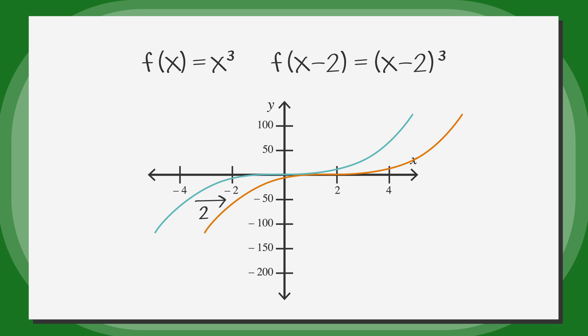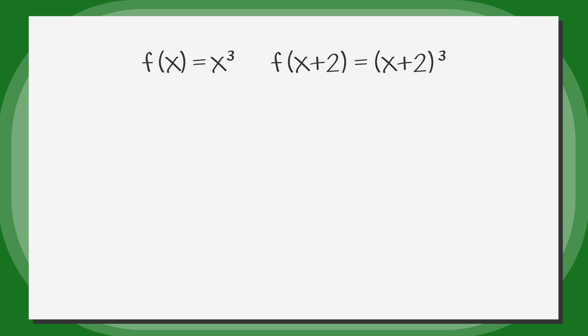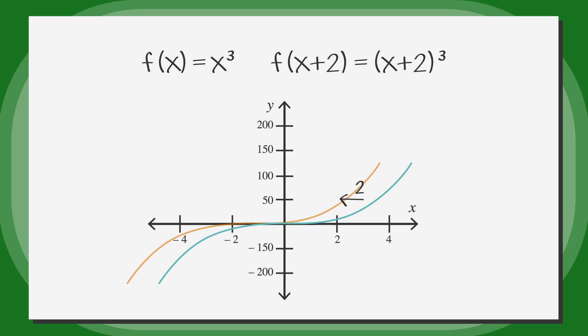Algebraically, substituting x plus 2 in for x, we get the new function (x+2) cubed. Then f(x+2) would shift the function f(x) equals x cubed to the left by 2.